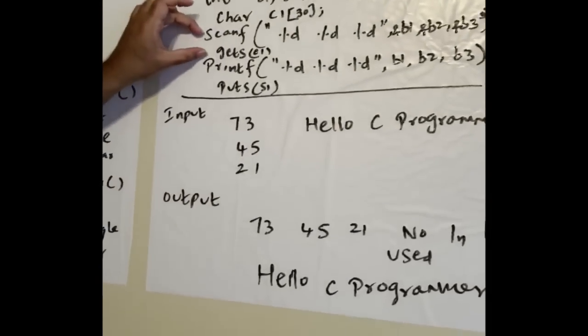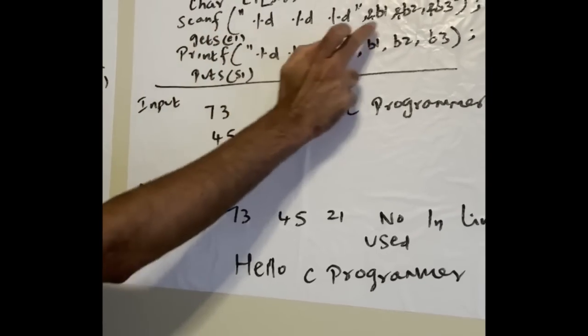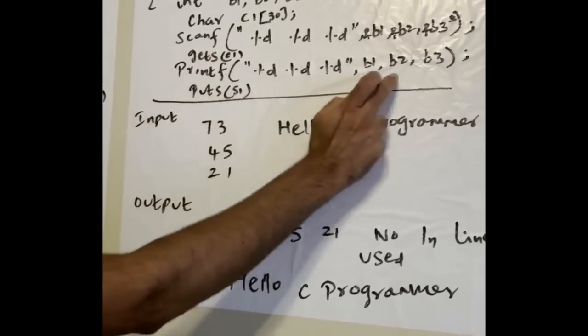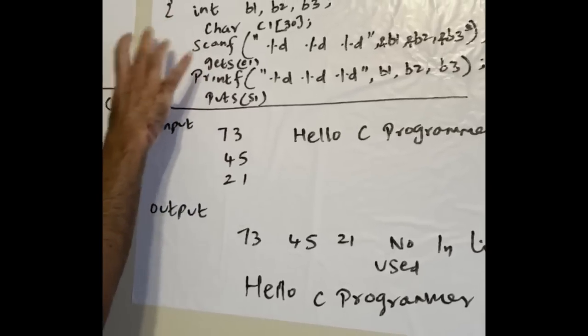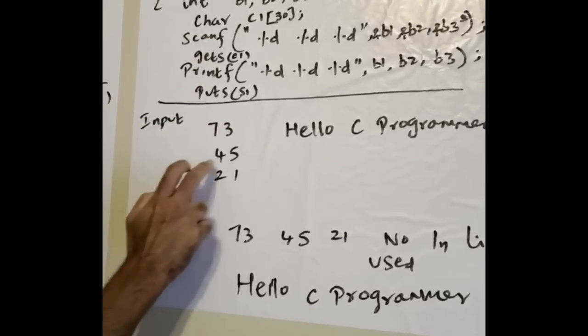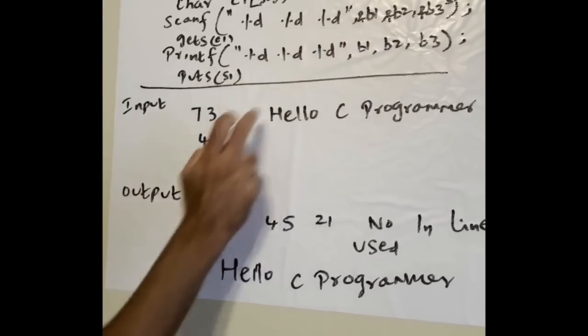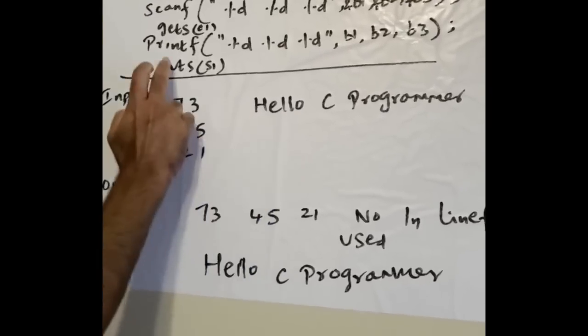Basically you're getting two input values, displaying two output values. We get three integers and get one string, print the three integers, print the string. When you execute this program, this will be the input.